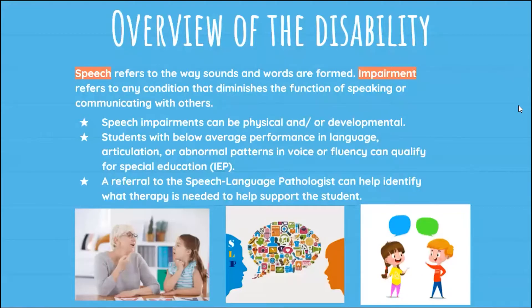Right off the bat, I wanted to go through the overview of this disability. We break down speech and impairment into two different parts. Speech refers to the way sounds and words are formed, whereas impairment refers to any condition that diminishes the function of speaking or communicating with others. Speech impairments can be physical or developmental, and these could be setbacks that hold back students. In the education system, we look to see if students are below average in performance in language, articulation, and abnormal patterns in voice or fluency. This is where we start to build the IEP and request special education services, and get a referral to the speech pathologist to identify therapies that can best support each individual student.